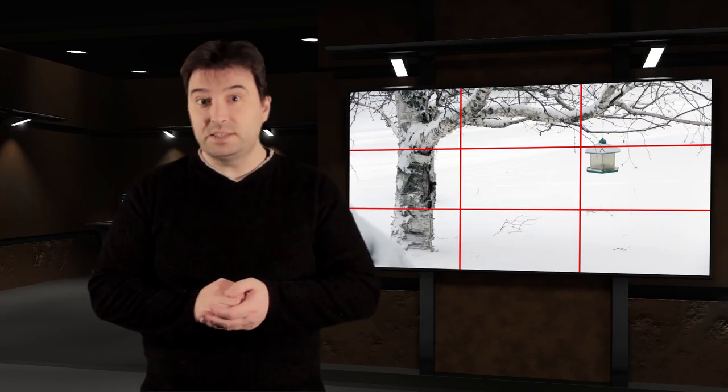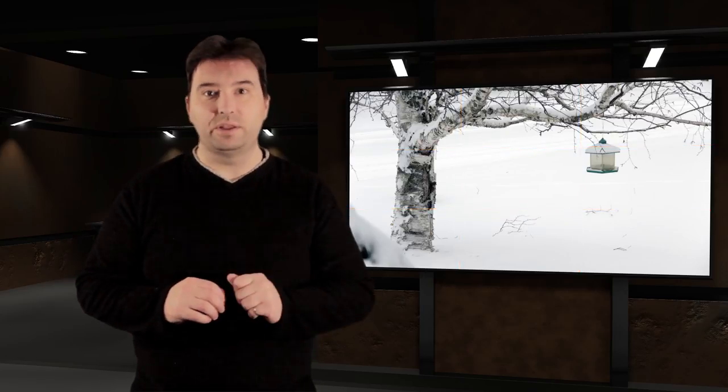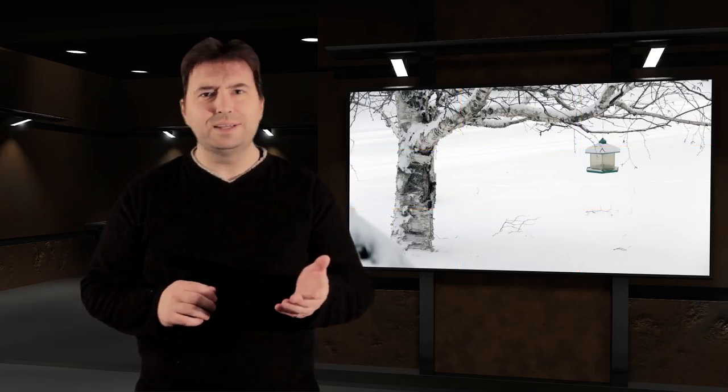Sometimes it's enough to place your subject near one of the lines. Remember, this isn't a hard and fast rule. When your subject is a person, it's common practice to balance the subject with where they're looking with respect to the camera. If they're looking directly at the camera, such as when they're addressing the audience, you can usually get away with just about any framing.